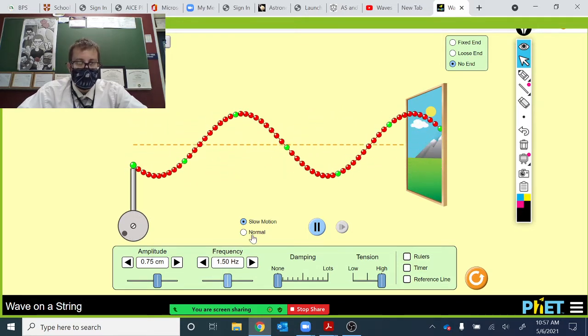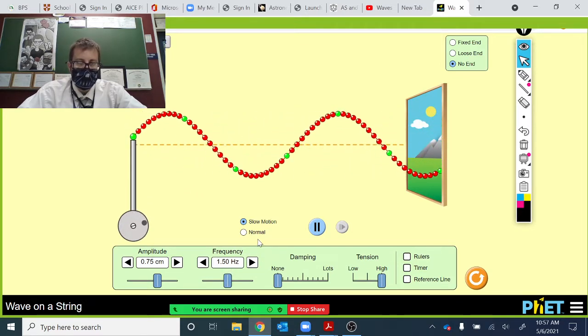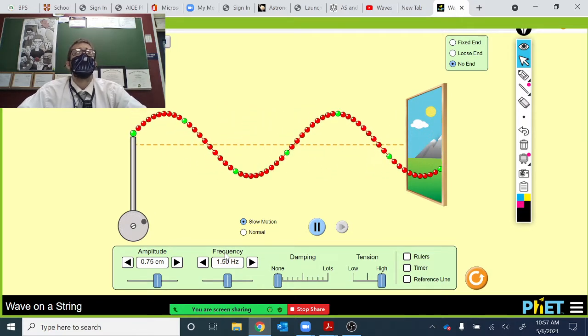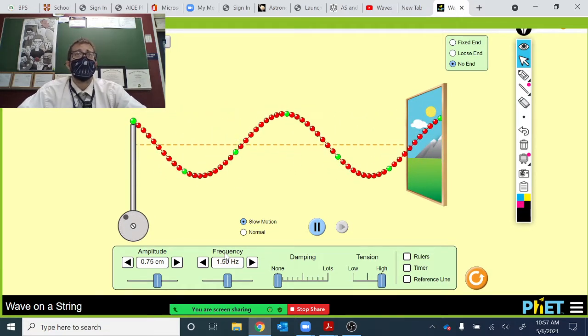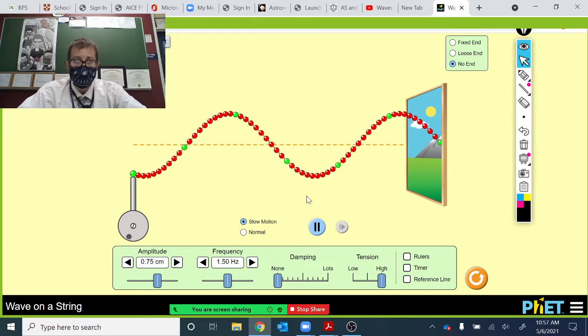We can read that the frequency is 1.5 hertz. Frequency tells us the number of waves per second. How many waves per second?